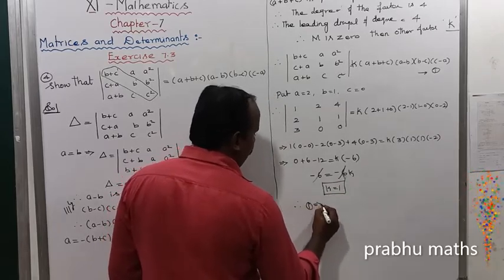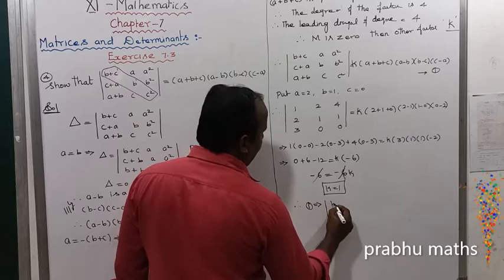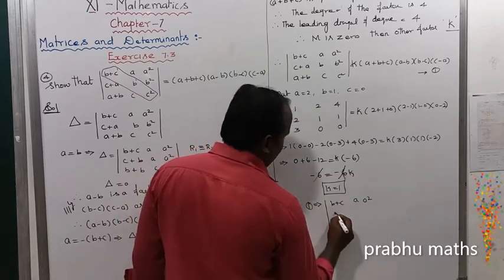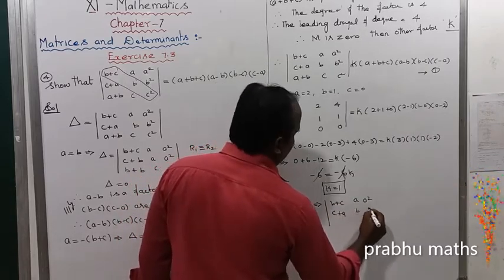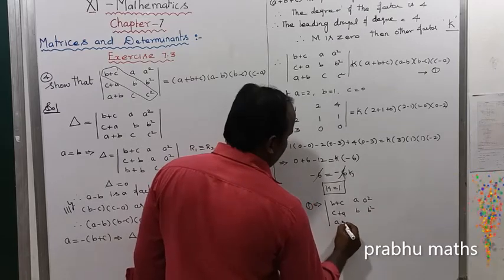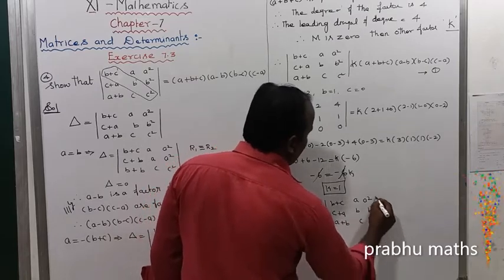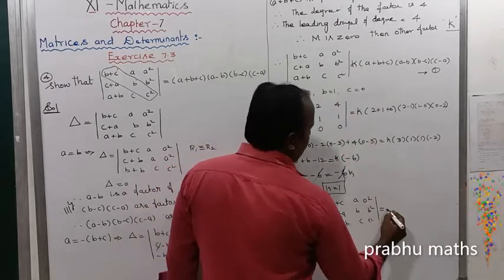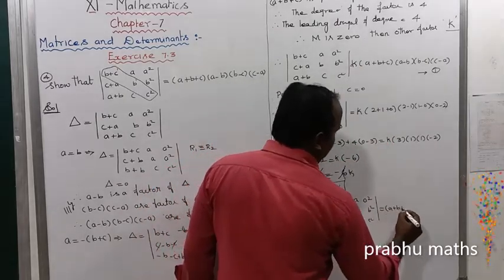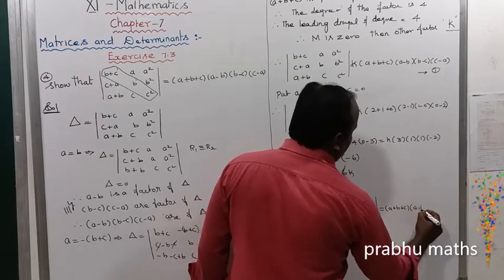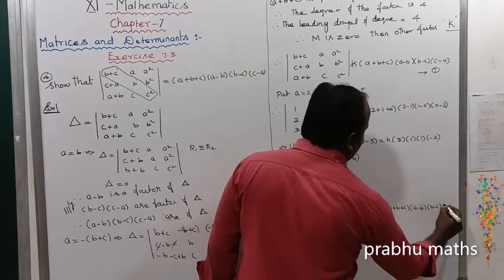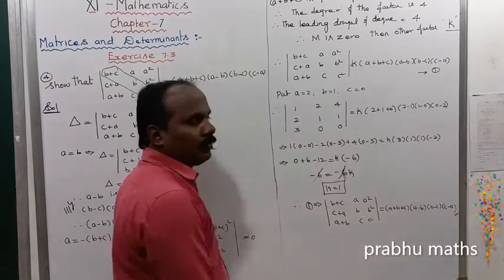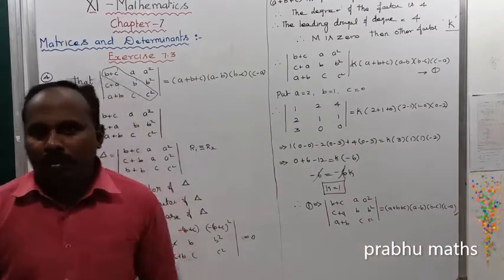Therefore, replacing k with 1, the determinant of b+c, a, a² / c+a, b, b² / a+b, c, c² is equal to (a+b+c)(a-b)(b-c)(c-a). We have obtained the solution.